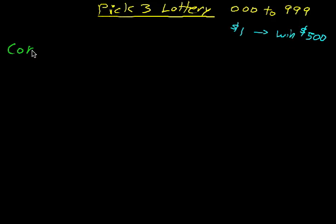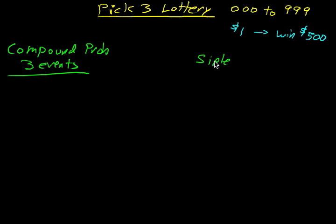We're going to actually figure out the compound probability, the compound probability of three separate events. We're also going to do simple probability. Simple probability, which is one event. We're going to do the math both ways.